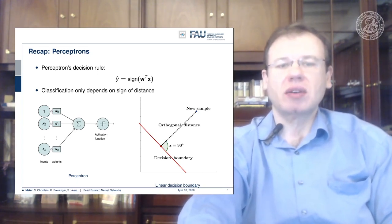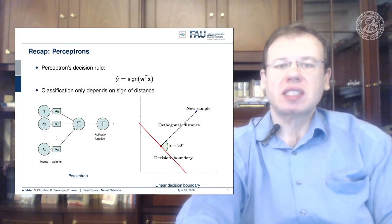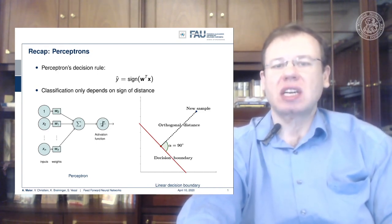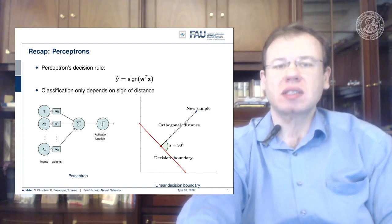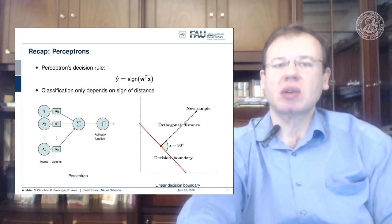We are only interested in the sign distance that is computed this way. You can interpret this as shown here on the right hand side. This is a line, the decision boundary shown in red. What you are computing with this inner product is essentially a signed distance of a new sample to this decision boundary. If we then only look at the sign, we will decide whether we are on one side or the other side.